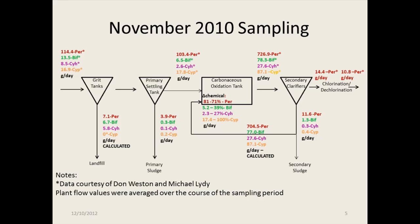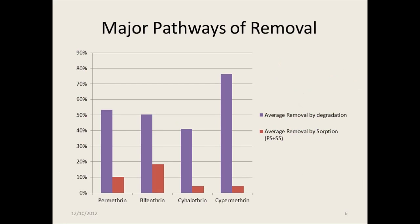I've also indicated which values were calculated and which were based on a physical measurement. Here I'm showing the amount that was removed by degradation in the carbonation oxidation tank. The most surprising piece to me was that when you look at the percentage removed versus how much is actually going into the sludge, there is more being removed by biodegradation than by absorption. This is an average removal by absorption up to the primary and secondary sludge, and this bar is the amount removed by biodegradation. Upon further reading, this is in line with what most other studies have found.